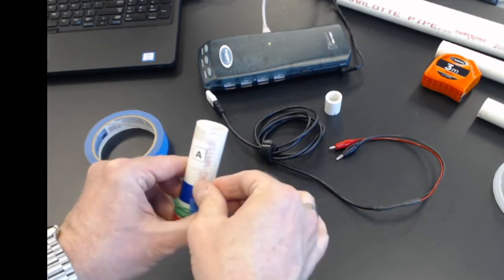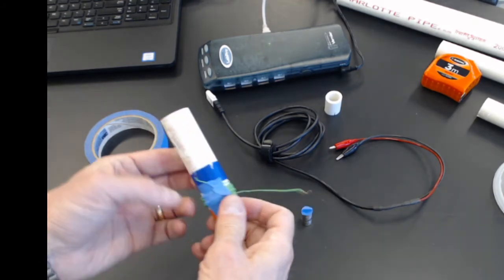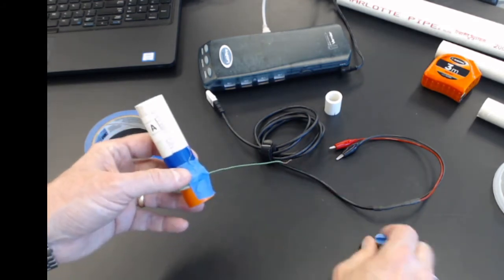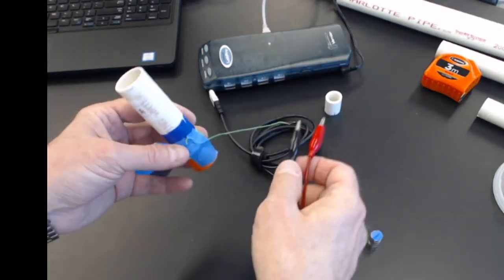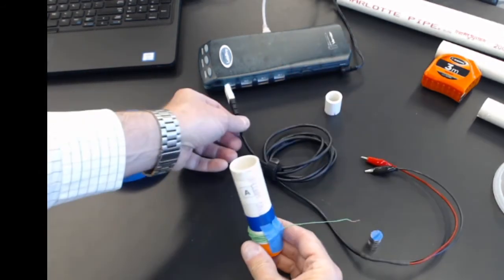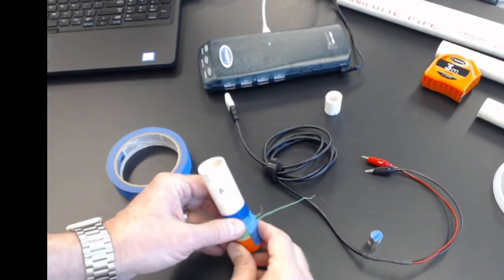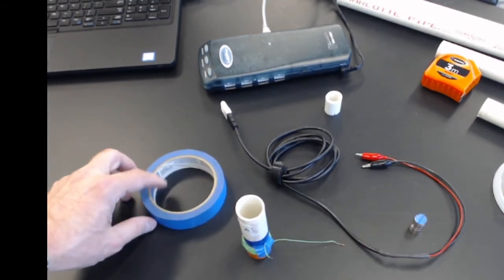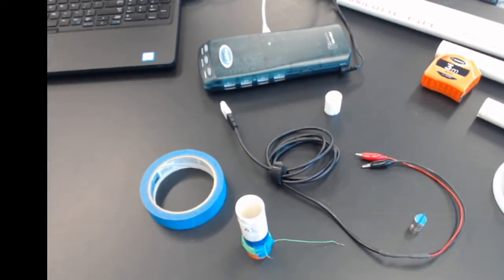Now we have twenty windings and then we'll connect it to the voltage sensor. And then we'll put the voltage sensor into Logger Pro. But I need to show you some things about the setup of Logger Pro.